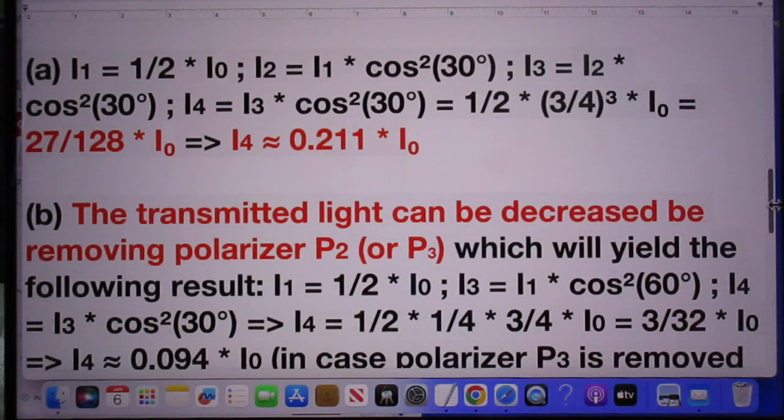And so the net result then is that what comes out of number four is this one-half I₀ times the power three of three-quarter.